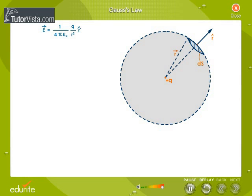Now, let's imagine a small area ds on the surface of the sphere. The electric flux is given by d phi e is equal to vector e dot vector ds. This can be written as d phi e equal to vector e dot unit vector n dot ds.